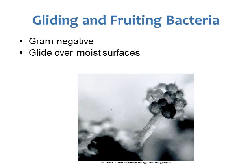The third type are the gliding or fruiting bacteria. These are also gram-negative bacteria that can glide over a moist surface, or they form fruiting structures with bacteria cells working together.